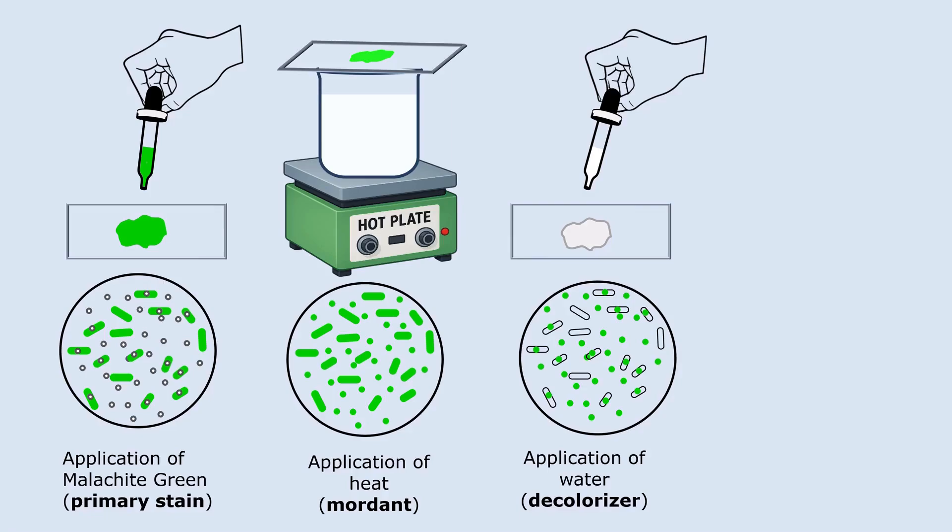So during the decolorization step, when you rinse the slide with water, the dye is easily washed out from the vegetative cells. Since malachite green has penetrated the spore, it stays locked in, and endospores and free endospores appear green.